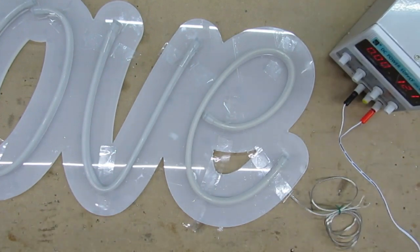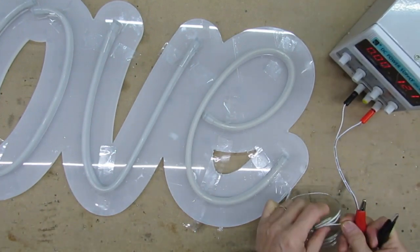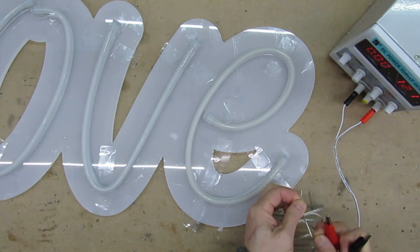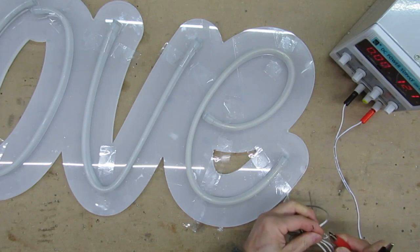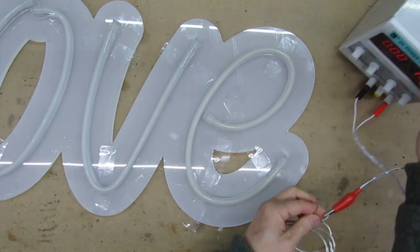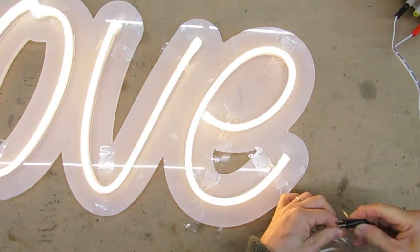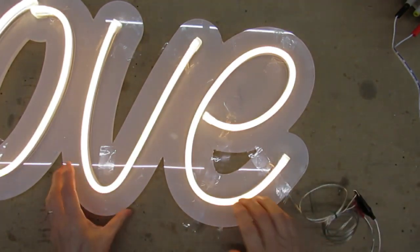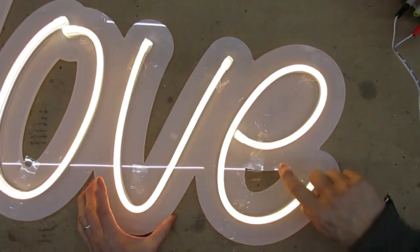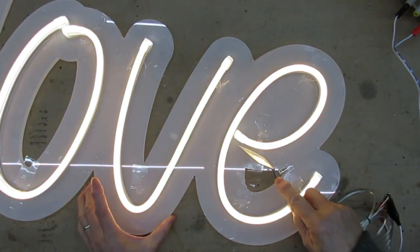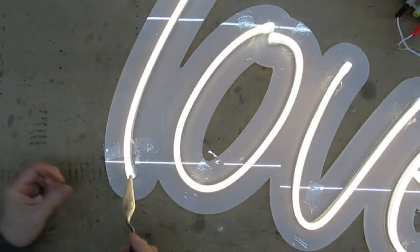Once I've finished installing the neon and end caps, I'm going to test the illumination using an adjustable power supply, also called a variable DC power supply. This sign is working fine. If one or more of your letters are not illuminating at this stage, it may be because one of the wires has come loose so it's important to check your wiring before you add the end caps.